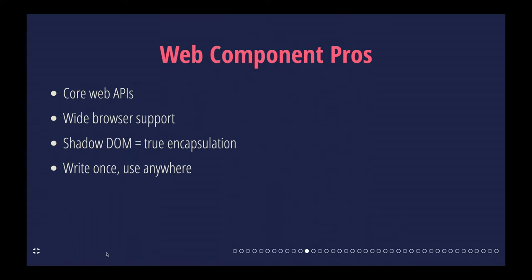Some pros about web components as a technology: they use core web APIs, they now have wide browser support — that hasn't always been the case given the long path of web components becoming a real thing. They can use the shadow DOM, essentially a scoped version of the DOM specific to that component, giving you control over styling and JavaScript events. And they get a lot closer to that write-once, use-anywhere dream.